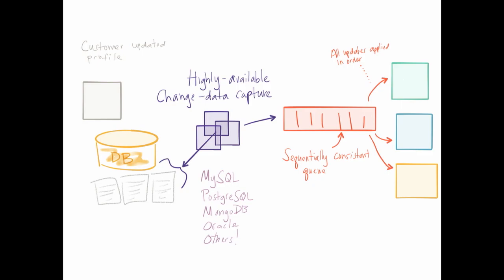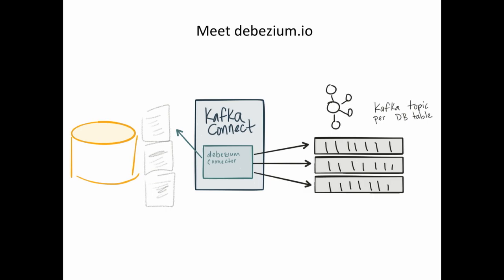Debezium is an engine with plugins for different databases — the architecture is pluggable so we can build new connectors for different database technologies. We have connectors today for MySQL, MongoDB, and Postgres. We'll be adding things like Oracle and Microsoft SQL Server and others. The way it works: we read the database transaction logs, decide which Debezium connector to use to capture changes, and then stream those tables and changes into Kafka topics.